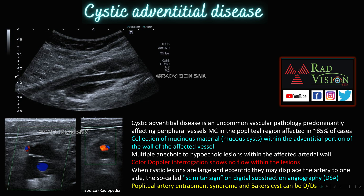On color Doppler, these cystic spaces do not show any color flow pattern, whereas the artery shows normal color flow. When these cystic lesions are large and eccentric, they may displace the artery to one side — this is called the scimitar sign on DSA. Other differentials include popliteal artery entrapment syndrome and Baker's cyst. Whenever you see multiple cystic spaces adjacent to the popliteal artery not taking up flow, definitely suspect cystic adventitial disease.